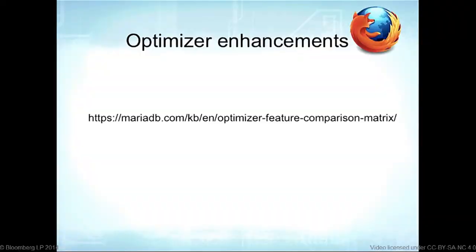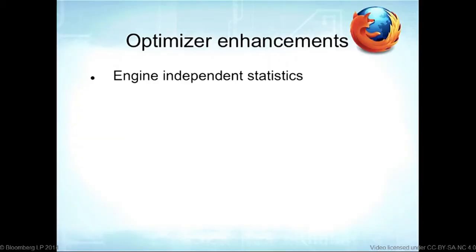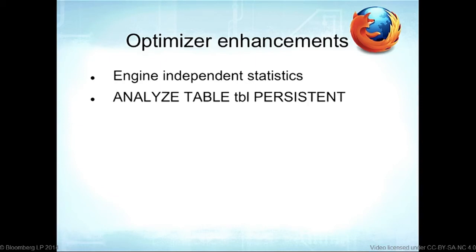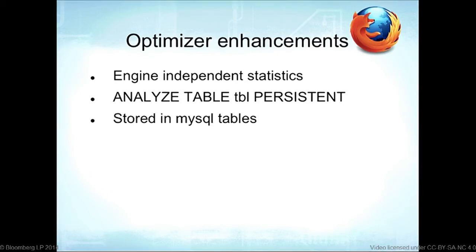Optimizer enhancements: there's a comparison matrix in the MariaDB Knowledge Base showing optimizer features across MySQL 5.5, MySQL 5.6, MariaDB 5.5, and MariaDB 10. One key feature is engine-independent statistics. Instead of 'ANALYZE TABLE', you run 'ANALYZE TABLE PERSISTENT', and the statistics are stored in MySQL tables — hence 'persistent' — making them available across storage engines.